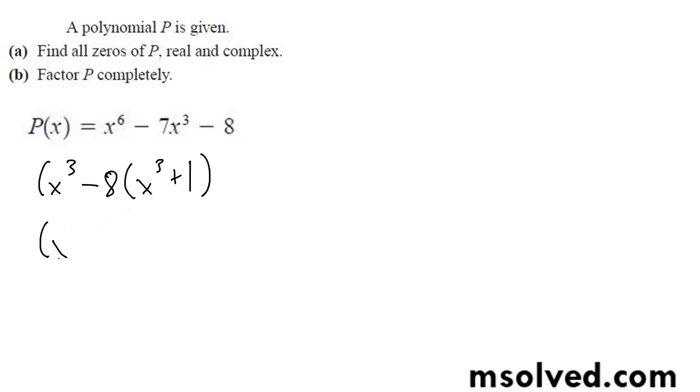So we can simplify this to x minus 2, x squared plus 2x plus 4, and for x cubed plus 1, I'm just going to factor out to x plus 1, x squared plus...